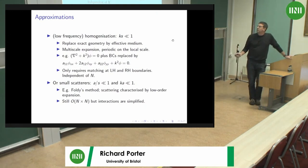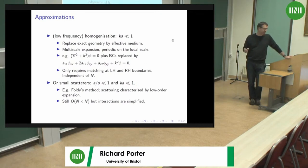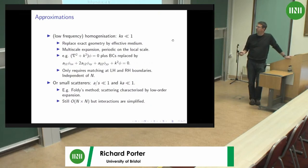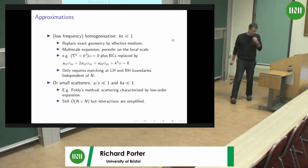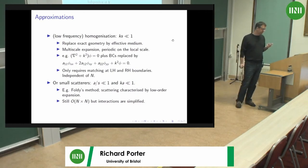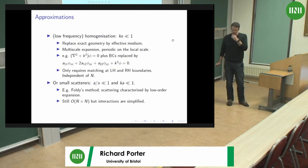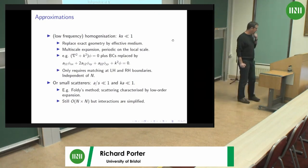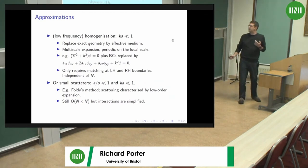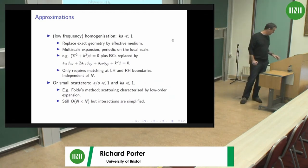Another method applies when you have small scatterers, where the scatterer size a is small with respect to the cell and ka is also small. Using something like Foldy's method, the scattering is characterised by a low-order expansion — normally a dipole and a monopole — to characterise scattering by these small scatterers. This is a really popular system where the interactions are much more simplified.